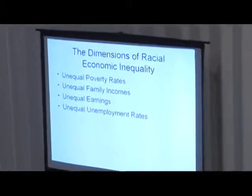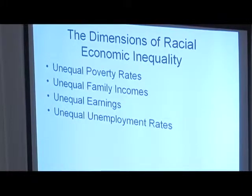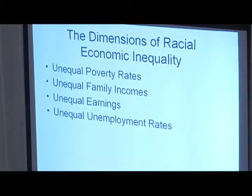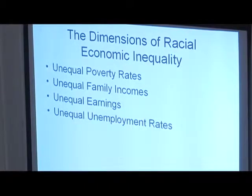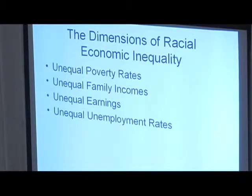When we talk about inequality and poverty, there are four different things we could be talking about. One is poverty rates — the percentage of people living in households below the poverty level. For example, for a family of four the poverty level is $22,000. Another is family or household incomes. A third is earnings — what people make on the job and whether there are differences between races. And finally, differences in unemployment rates — the percentage of people actively seeking work but unable to find a job, even part time.